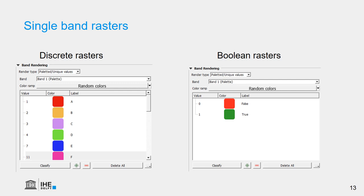The colors need to be chosen in such a way that they are intuitive, and we can then label each value with the name of the class. Boolean is very similar — we also use paletted or unique values, but we only have values 0 and 1. We can label them false or true, or flooded or non-flooded, using discrete random colors.